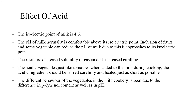Effect of acid: the isoelectric point of milk is 4.6. The isoelectric point is where there will be no electrical charges. The pH of milk is normally above its isoelectric point. Inclusion of fruits and some vegetables can reduce the pH of milk, causing it to approach its isoelectric point. As a result, the solubility of casein decreases and curdling of the milk increases, because the acidic environment causes casein to curdle. When cooking with different vegetables and milk, different behaviors are seen depending on the polyphenol content and how much the pH of milk changes.